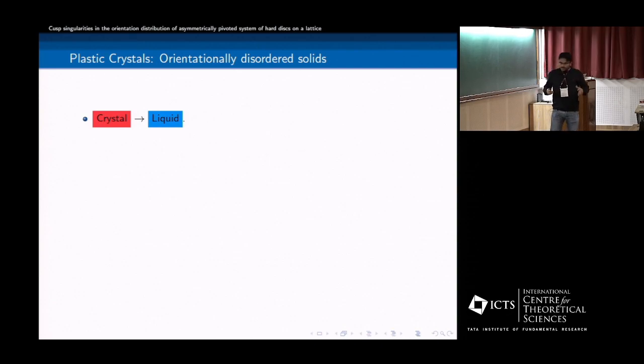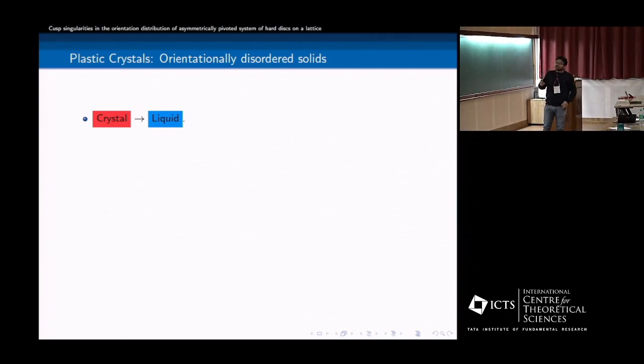So the motivation of our work is actually the plastic crystal, a less studied phase of matter in physics. So let me explain what it is. So for example, we have seen this transition between crystal to liquid phase, it's a one step transition. So crystal, I mean by crystal that if you have the constituents, the center of mass of the constituent occupy a lattice site and they can also rotate, and the direction is ordered in certain direction. So that is a crystal. Here the translation symmetry as well as the rotation symmetry is broken.